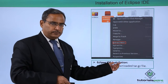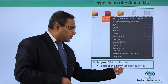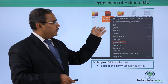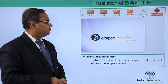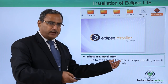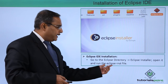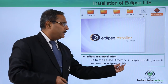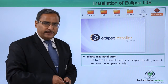Now, Eclipse IDE installation. Not only have we downloaded, but we are starting with the installation process. Extract the downloaded tar.gz file — it is there in the download folder. Go for right-click and then go for extract here. After extraction, go to the Eclipse directory, open the Eclipse installer, and run the eclipse-inst file. Click on that eclipse-inst file to start the installation process.